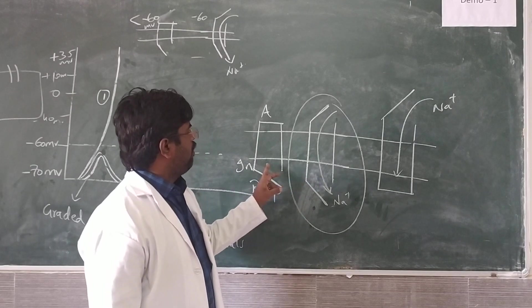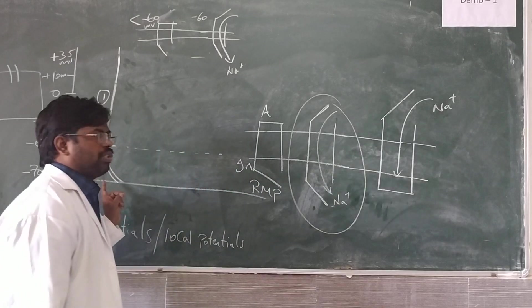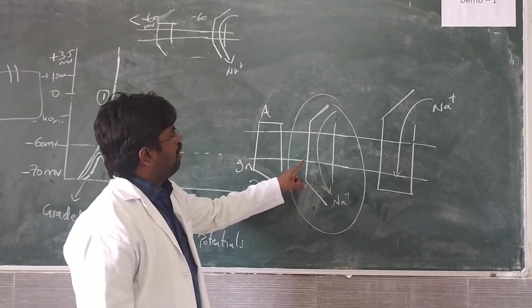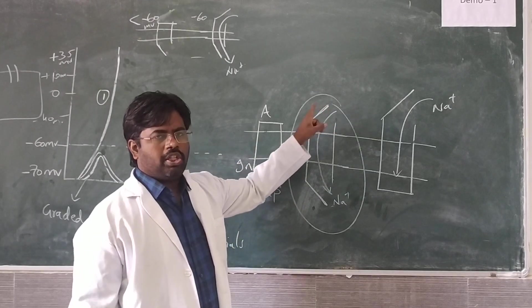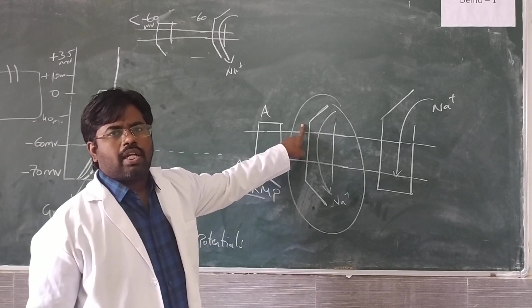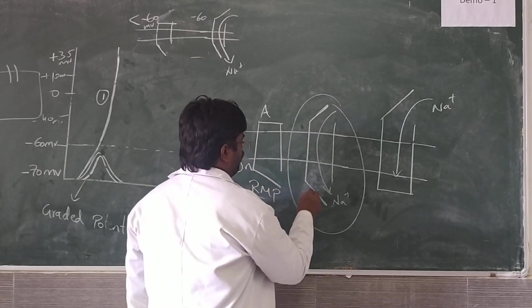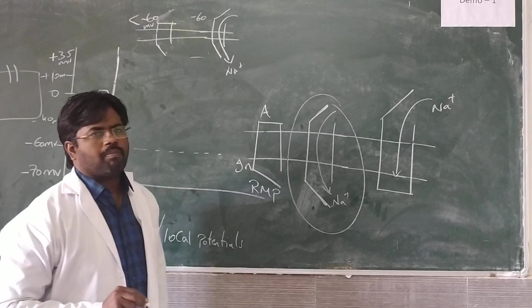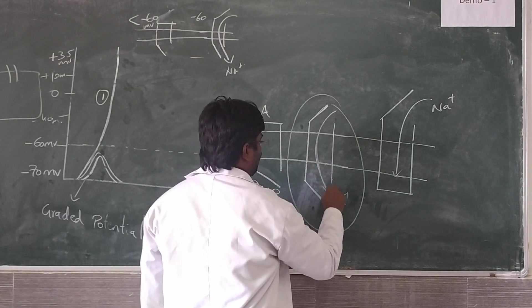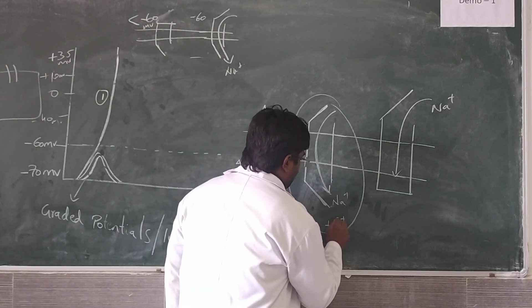When it reaches the threshold level, when the stimulus is given at threshold level, there is opening of initially mechanical gates, then voltage-gated channels of sodium will be opened. By this, the active gates of sodium and inactive gates will be kept open, and there is free entry of sodium ions into the cell, increasing positivity inside the cell.